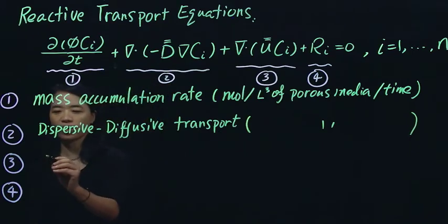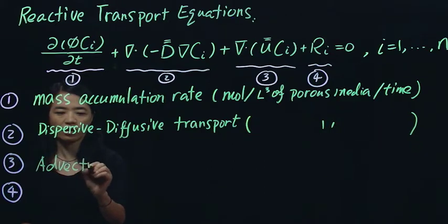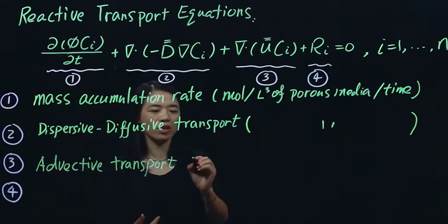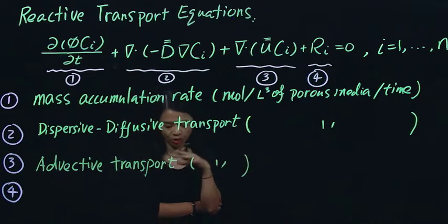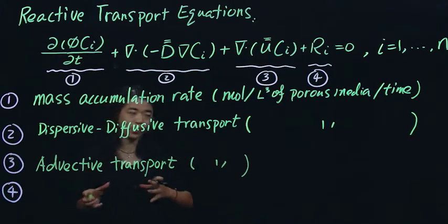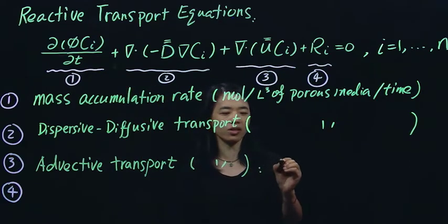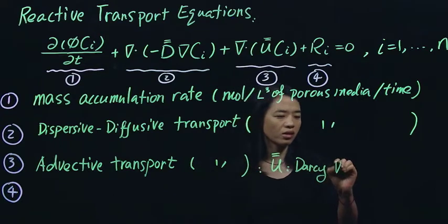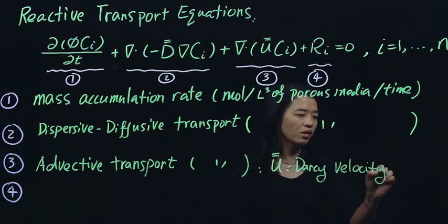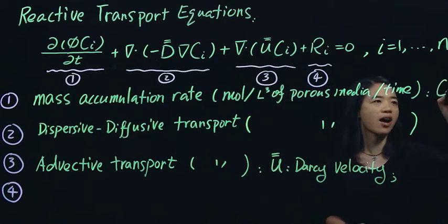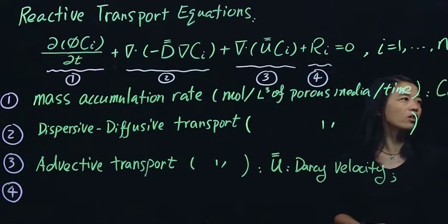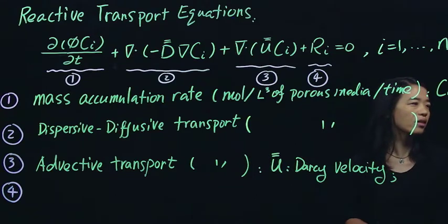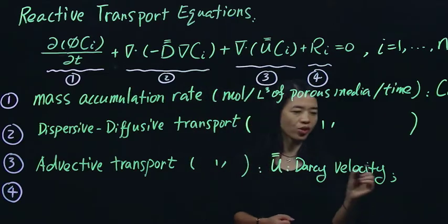And then the third term is what we call advective transport. And this is a process where, for example, rivers, right? And the chemical species will flow together with the water. So essentially the water brings the chemical species to different places. In this term, you have the U, which is what we call Darcy velocity. And then the concentration, actually I probably should explain here. The Ci will be the concentration of one chemical species of species i, a representative species i. And the Ci everywhere is the same.